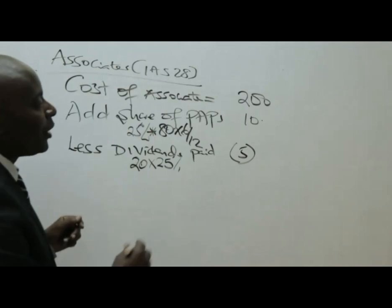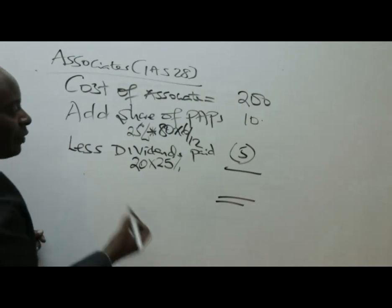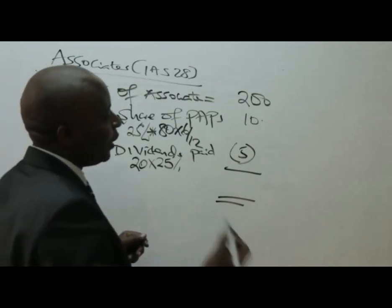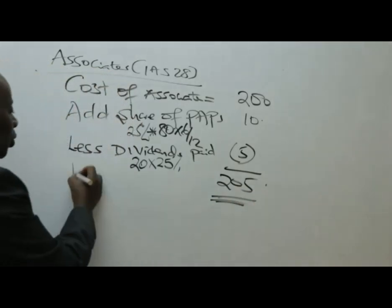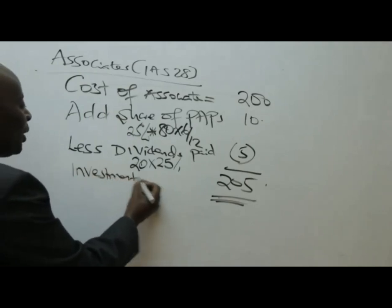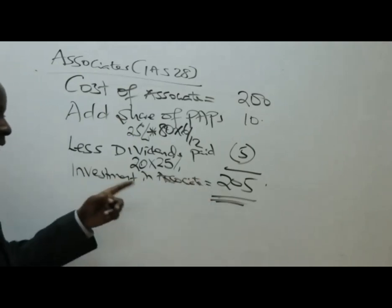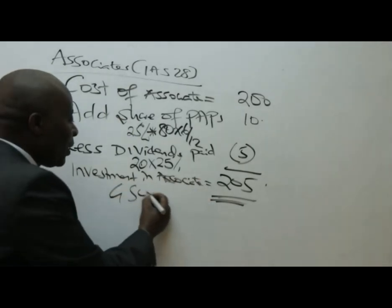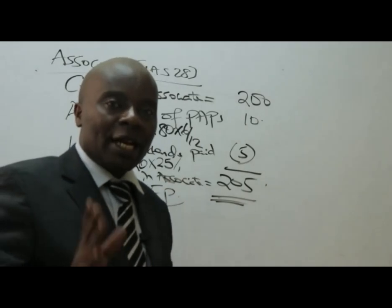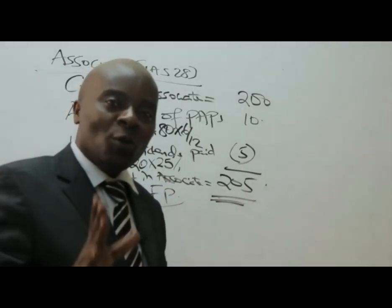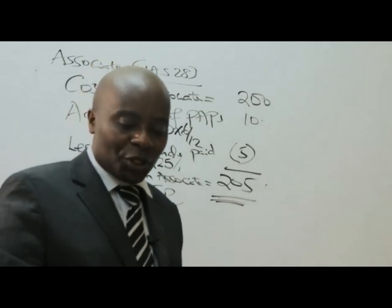So the value of the investment in associate at the end of the year is $200 + $10 − $5 = $205 million. This is the figure that will go to the group statement of financial position. Thank you very much, ladies and gentlemen. I look forward to you watching more videos in the future — please subscribe to this channel.